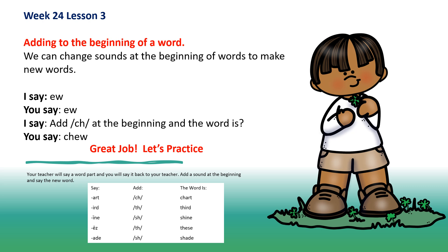Say ein. Add sh to the beginning and the word is shine. Say ease. Add th to the beginning and the word is these. Say aid. Add sh to the beginning and the word is shade. Very good.